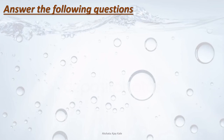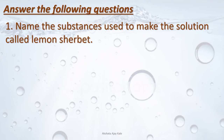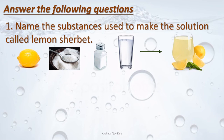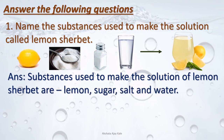Answer the following questions. First: Name the substances used to make the solution called lemon sherbet. Substances used to make lemon sherbet are: lemon, sugar, a pinch of salt, and water — when we mix all these in required quantity we get a tasty lemon sherbet.